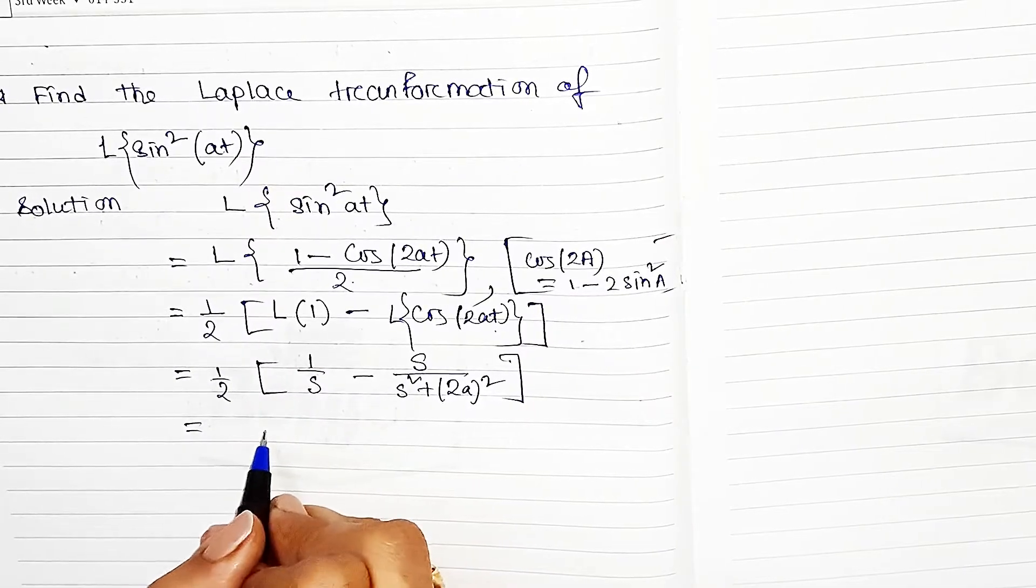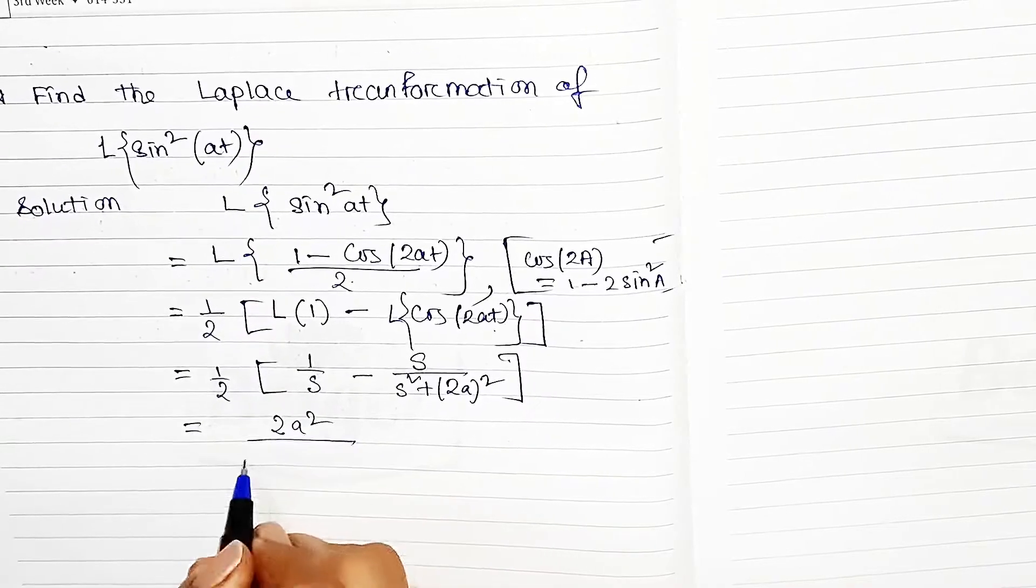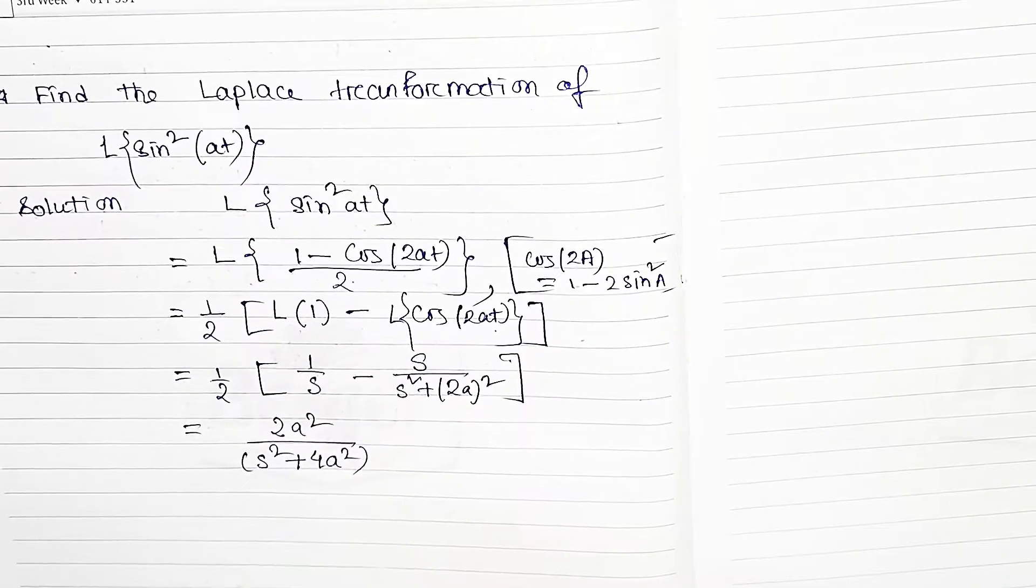In the next line we get the final result: 2a²/(s² + 4a²).